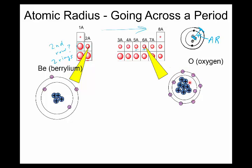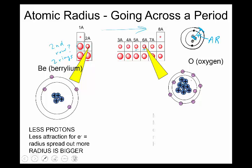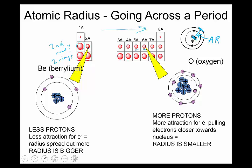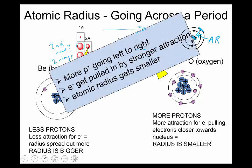So it kind of like sucks in these electrons closer. So if you add one extra proton, let's say another one here, it would pull in, you have another positive charge in the middle, so it pulls electrons in even more. So less protons, and I have all this summarized on a slide coming up. So there's more protons going left to right, and the electrons get pulled in by stronger nuclear attraction. Therefore, the atomic radius gets smaller.